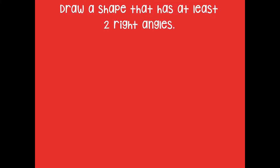Here's another one: draw a shape that has at least two right angles. Pause the video and draw your shape. Here's what I came up with — I drew a shape with different sides, all straight sides to be a polygon. This one has a lot more than two right angles — it actually has four. So it has at least two because it has four right angles in this shape.